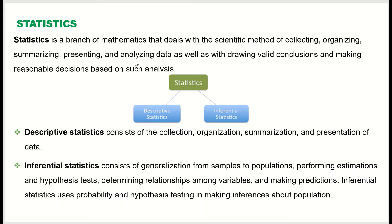The second part is that after collecting this data, we use it in making conclusions or inferring about the population. Statistics has two big branches: the first is called descriptive statistics and the second is called inferential statistics.